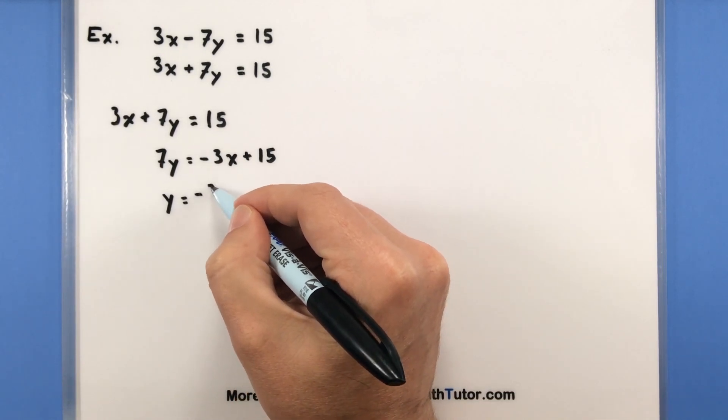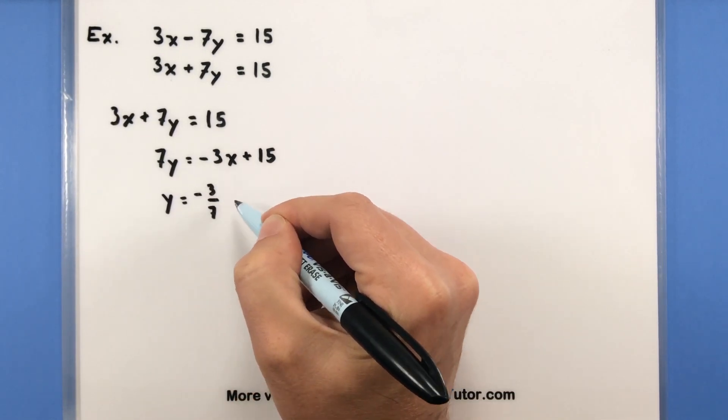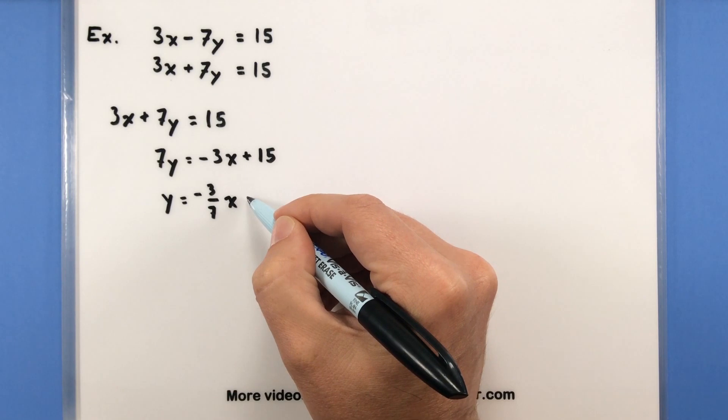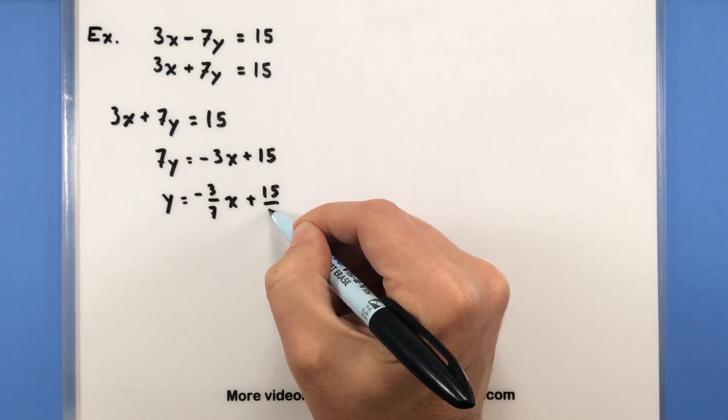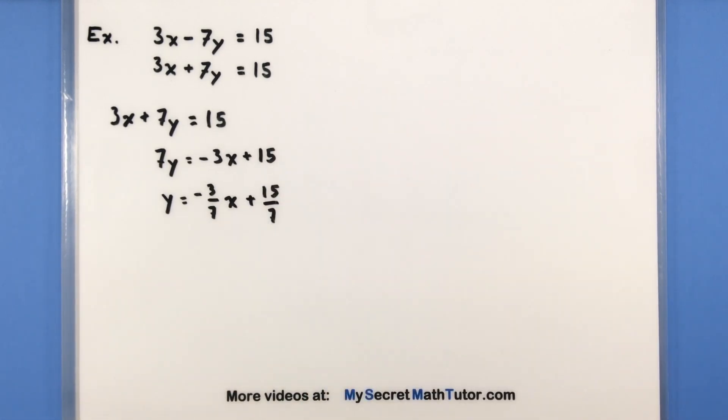Now, this will give us some fractions, but I'm not too worried. We're just going to have to move forward with this. That's going to be okay. So I have y is equal to negative 3/7 x plus 15/7.